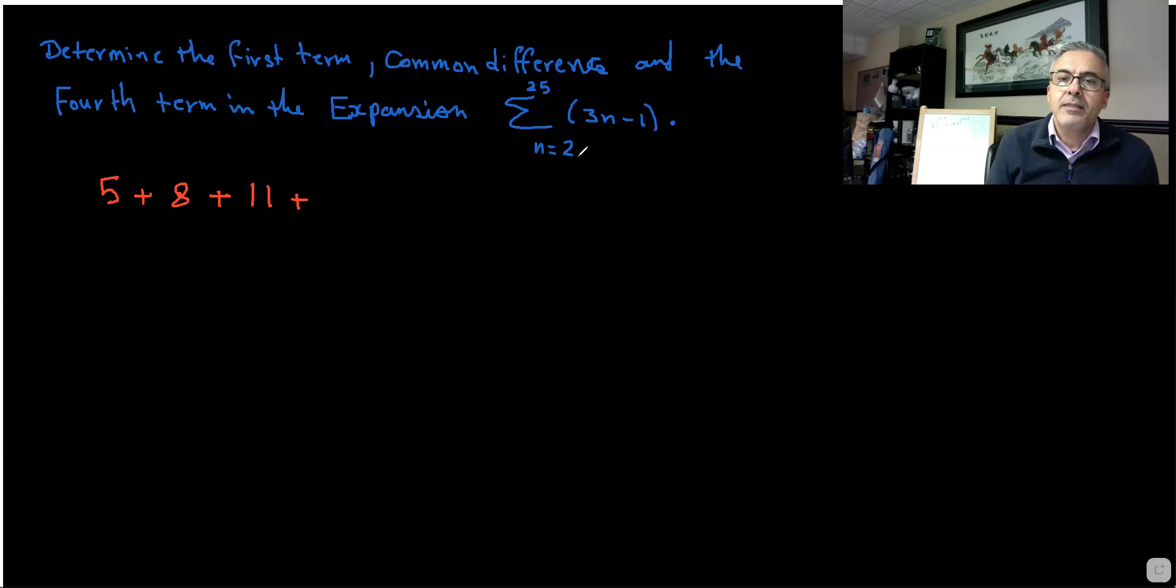Plus sub n, the next number, which is 5. 3 times 5 minus 1. 15 minus 1 is 14.